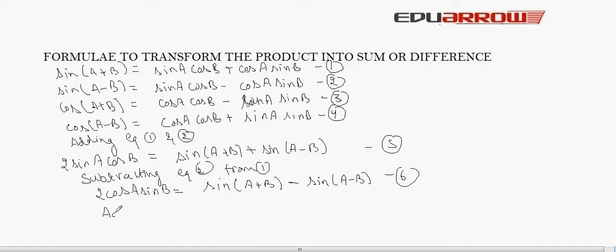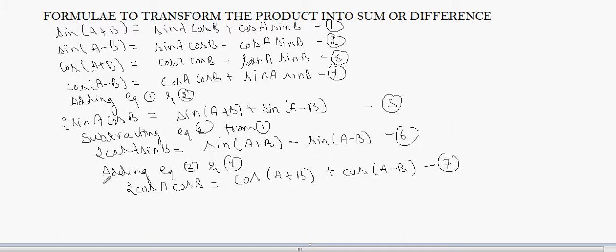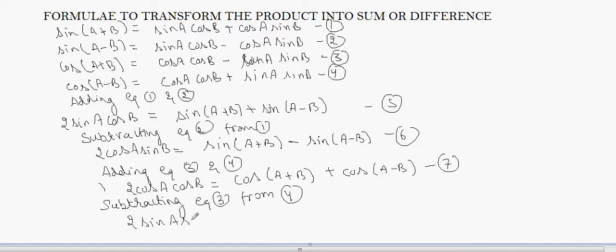Again, adding equation three and four, we get 2 cosA cosB is equal to cos(A+B) plus cos(A−B). And subtracting equation four from equation three, we get 2 sinA sinB is equal to cos(A−B) minus cos(A+B).